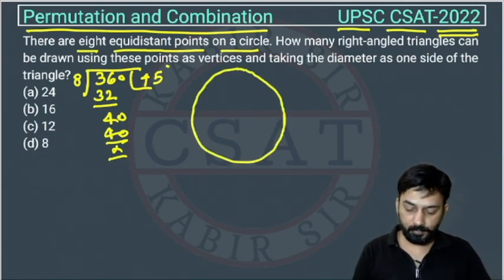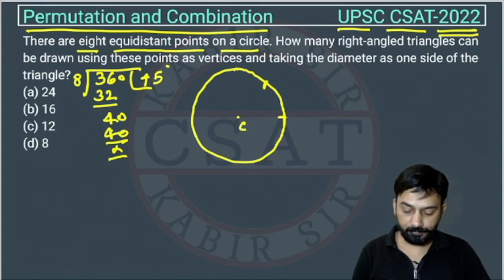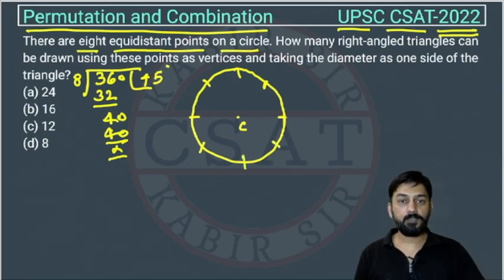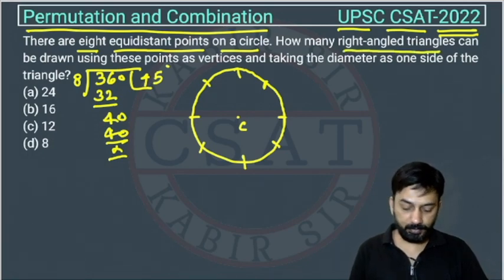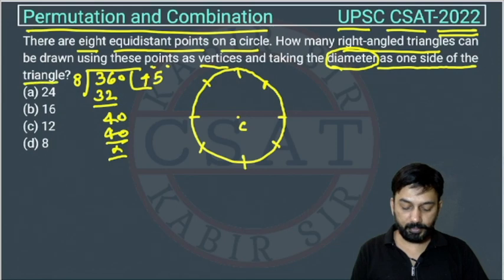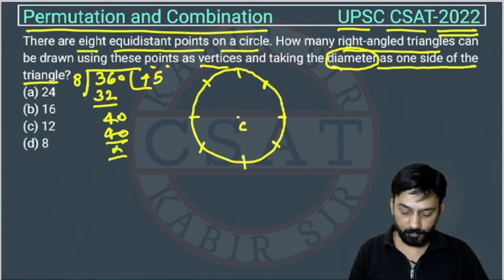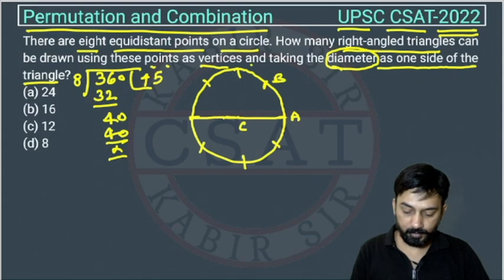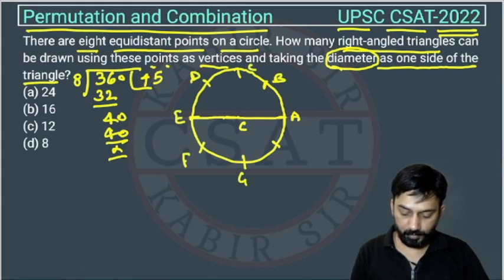Suppose this is a circle. The first point is here, then the second point will be at 45 degrees — because this is the center of the circle. So the first point is here, second is here after 45 degrees, the third will be here, the fourth here, and the fifth here, then similarly sixth, seventh, and eighth. We can call these points A, B, C, D, E, F, G, and H.